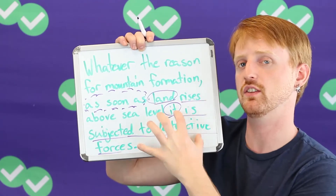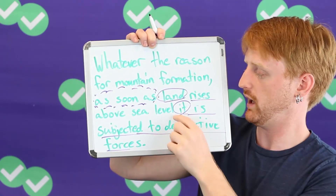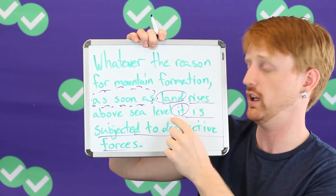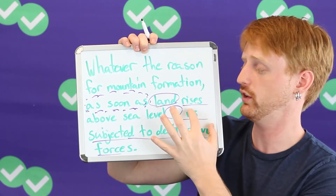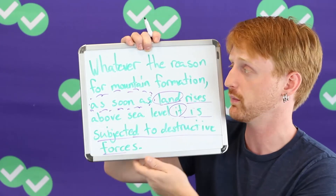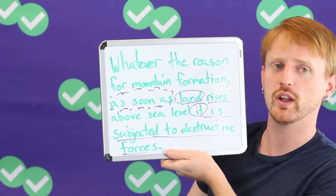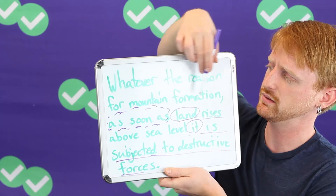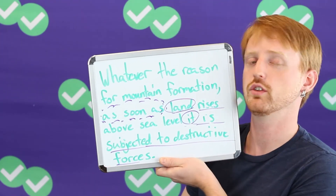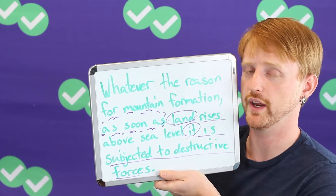The main idea is that land is destroyed, and we need to know that 'it' refers to land in order to understand this main idea. One more point: you may have noticed that at the top of the sentence, there is no subject and no verb.